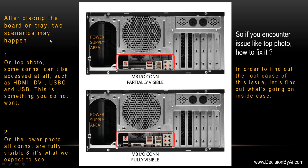After placing the board on the tray, two scenarios may happen. One: in the top photo, some connectors cannot be accessed at all — such as HDMI, DVI, USB-C, and USB. This is something you do not want. Now, in the lower photo, all connectors are fully visible, which is what we expect to see. Look here — you can see everything. All IO connectors are fully visible.